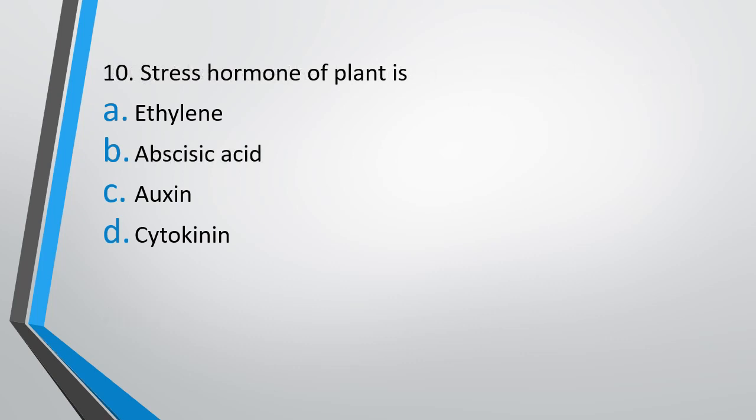Question 10: The stress hormone of a plant is — Option A: ethylene, Option B: abscisic acid, Option C: auxin, or Option D: cytokinin. The correct answer is Option B, that is abscisic acid, which acts as the stress hormone of plants.